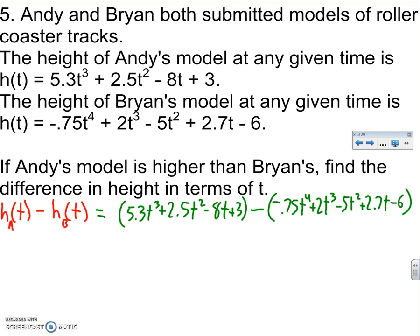+ 2.7T - 6. Just like 4, we just figure out to do the parentheses matter. The first one doesn't do anything, so I'm going to drop it. I'll leave everything exactly the same. 5.3T³ + 2.5T² - 8T + 3.